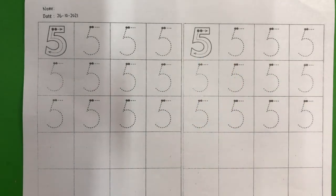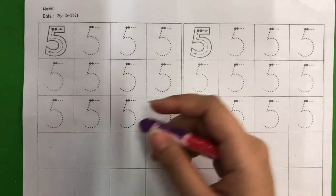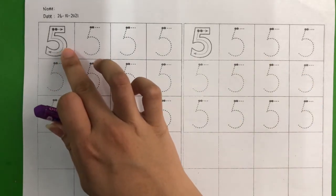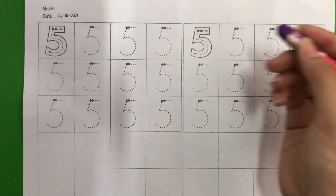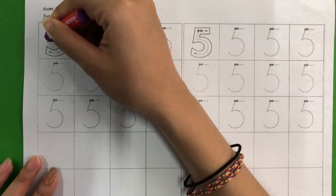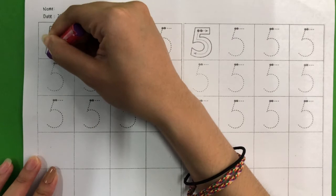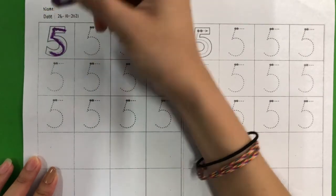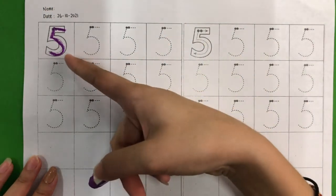Now take out one of your crayon. And then we are going to start from this part. Number 5. So we go down first, and then draw a big curve, and close it. Number 5.